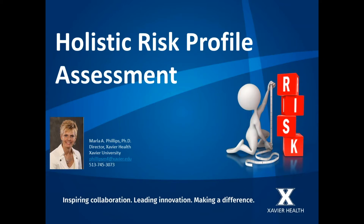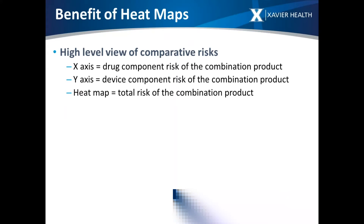When you aggregate the data, the real key is to make sure you understand all the data underneath it that led up to that aggregation — all the different components and data points that led to what you're looking at at a higher level. The heat map really is a high-level view, and it's a comparative way to look at risks across a number of different things.